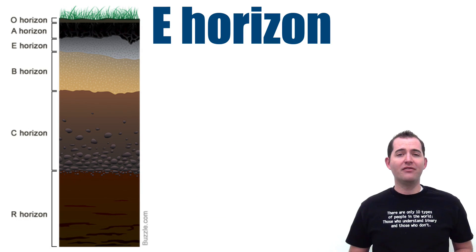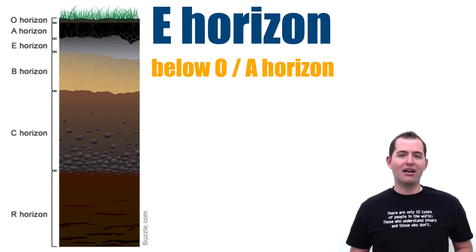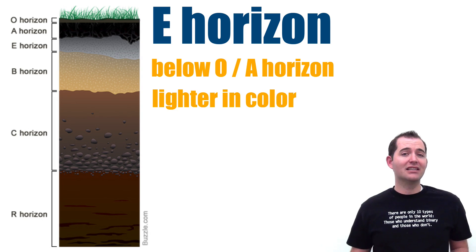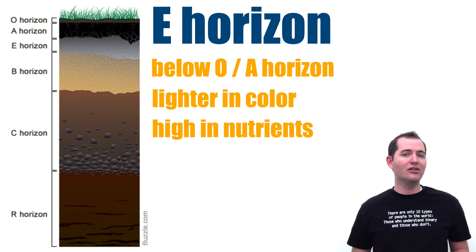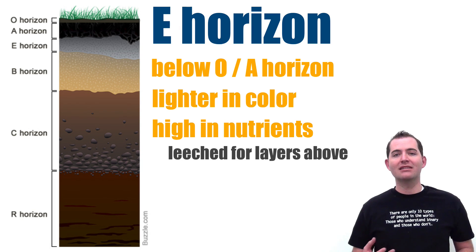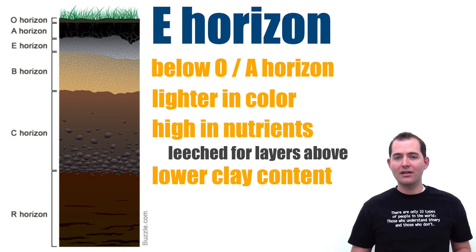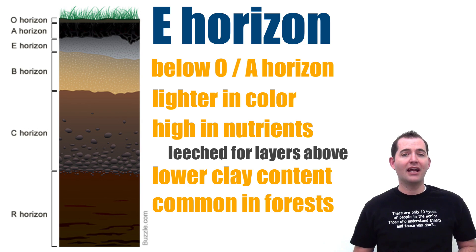Horizon E is often found below the O and A horizons. It is usually a lighter color than the previous horizons that have been mentioned and is often high in nutrients which have been leached from horizons O or A. This layer usually has a lower clay content than those above it, and E horizons are common in areas with well-defined O and A horizons such as forests.